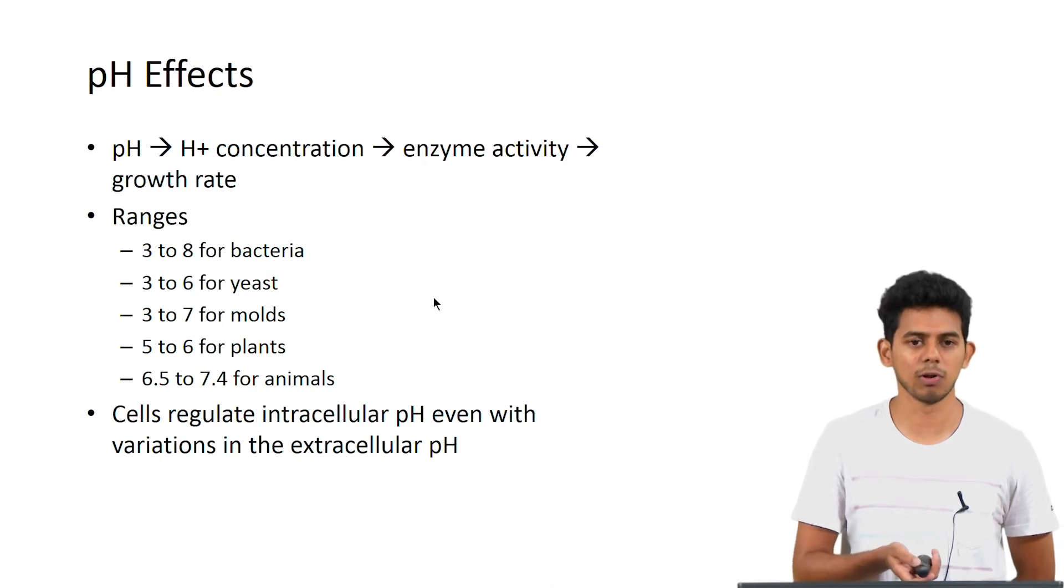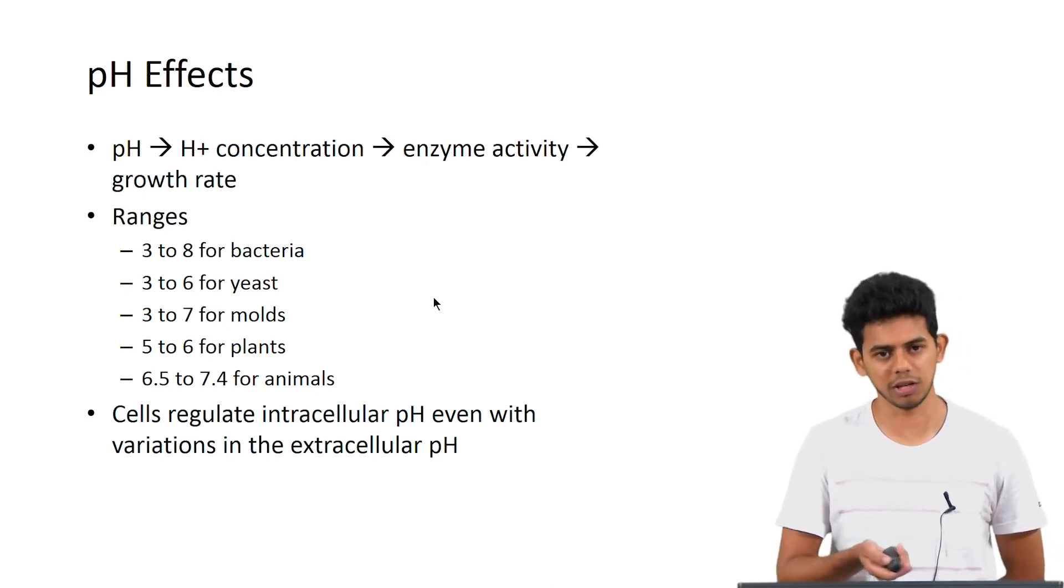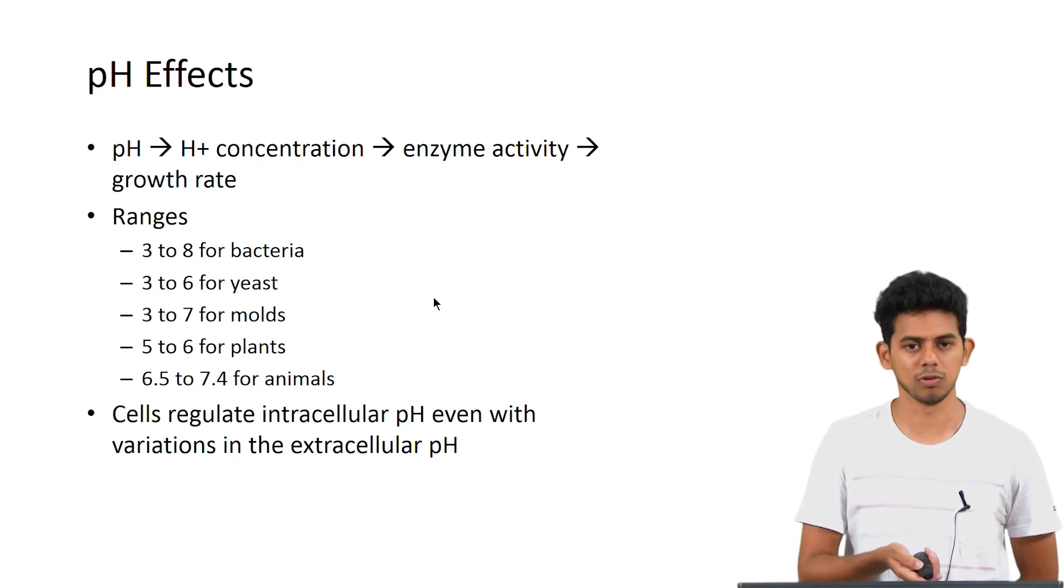The cells are capable of regulating their intracellular pH even when there is a variation in the external pH. There is a buffering system usually for it.